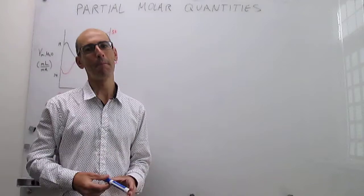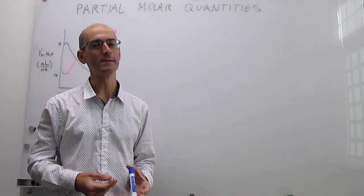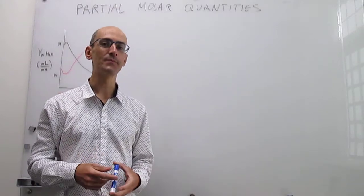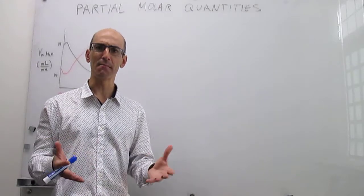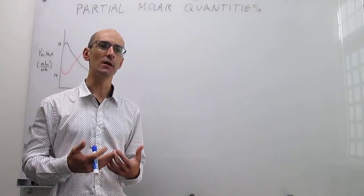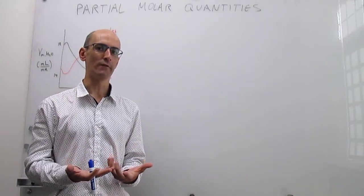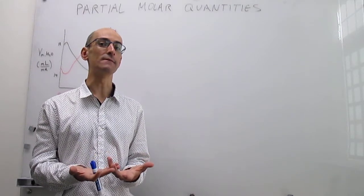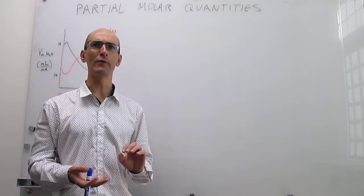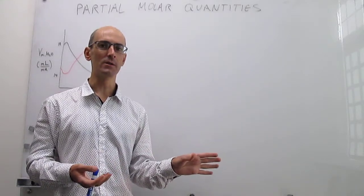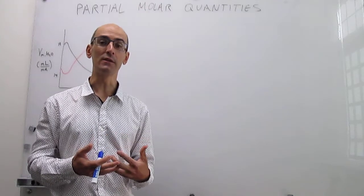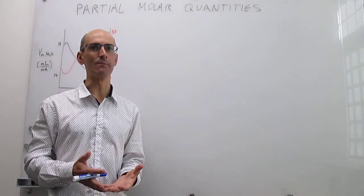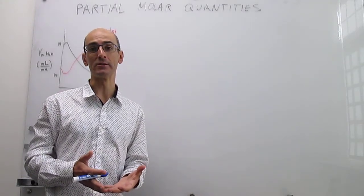In this video we describe partial molar quantities. The main question we're trying to answer is: when you have a mixture of two components — a binary mixture — how do you determine the overall thermodynamic variable of a mixture? Suppose the thermodynamic variable we're interested in is volume. This can be extended to any other thermodynamic variable like molar Gibbs energy or enthalpy.